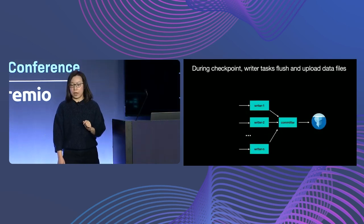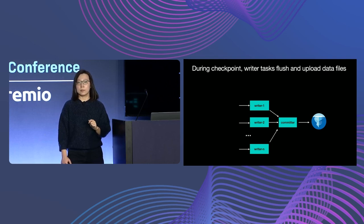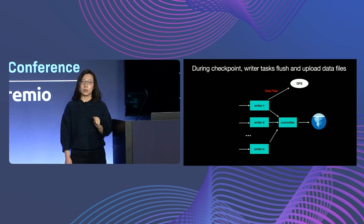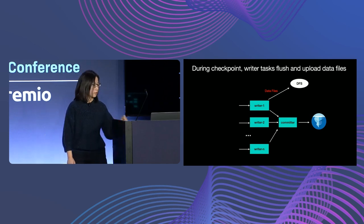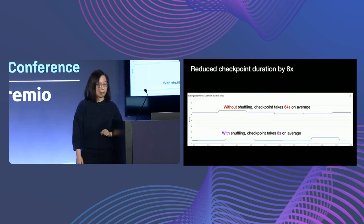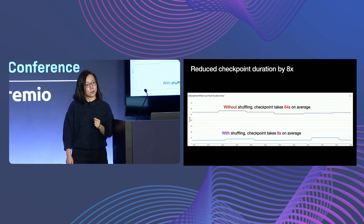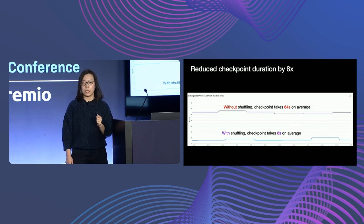During checkpoints, if every writer needs to write many partitions concurrently, it also needs to upload many files, which takes longer. We use checkpoint duration to measure the difference between test A and test B. From the flush duration metric, the purple line shows that without shuffling, checkpoint takes 64 seconds on average. But with shuffling, it only takes 8 seconds — 8 times faster.